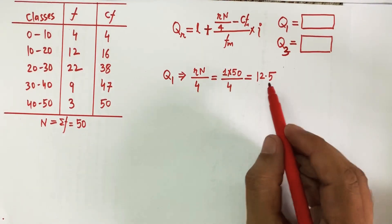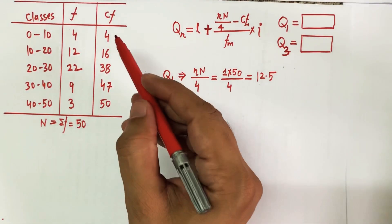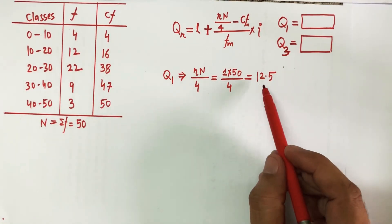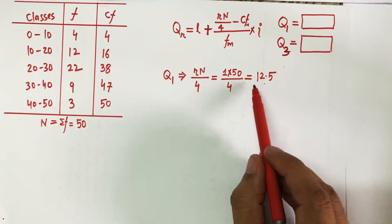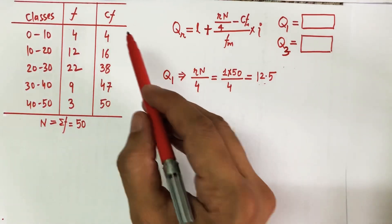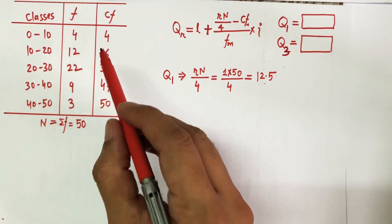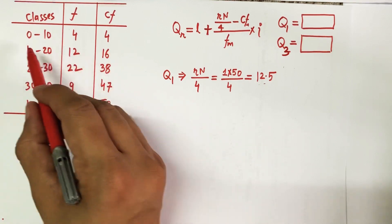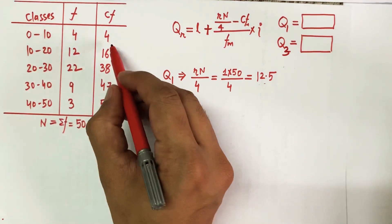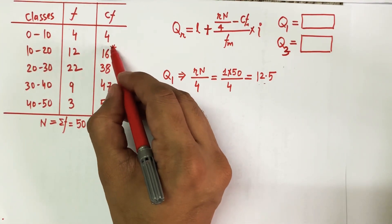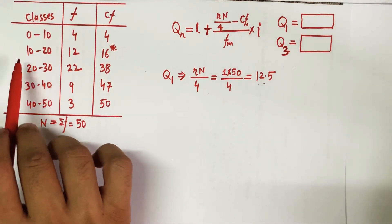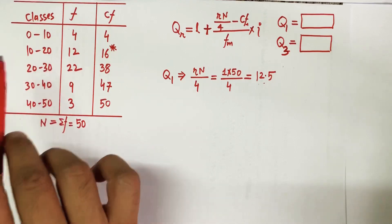I compare the obtained value 12.5 with the cumulative frequencies, looking for the cumulative frequency that first exceeds this value — not equals, but exceeds. Cumulative frequency 4 is less than 12.5; 16 exceeds it. The moment I find an exceeding cumulative frequency, the corresponding class becomes my quartile class. So the first quartile class is 10 to 20.